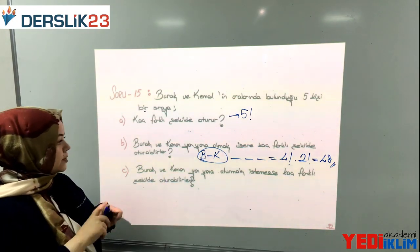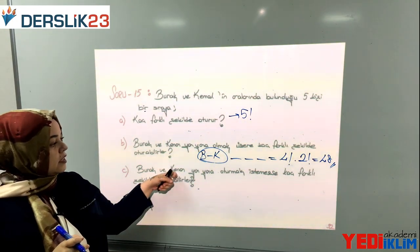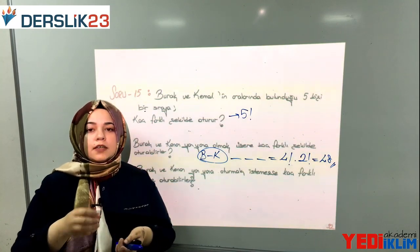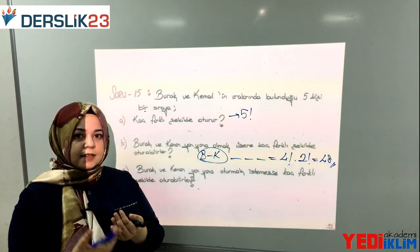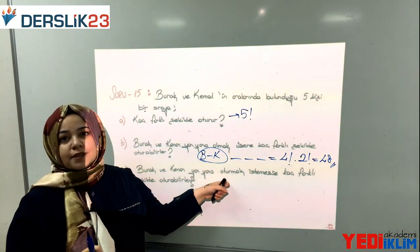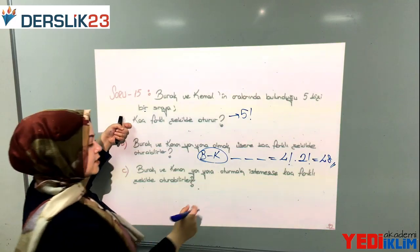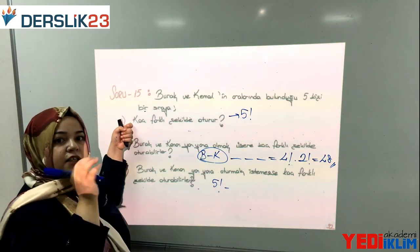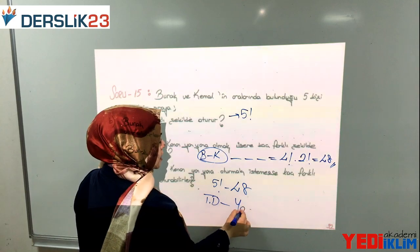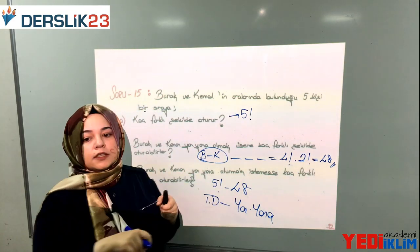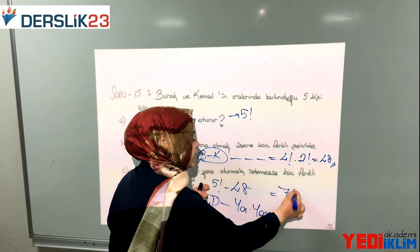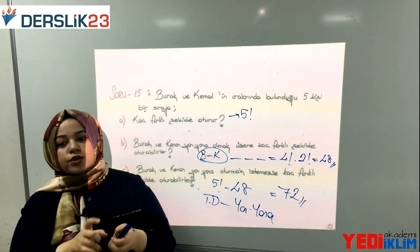C şıkkında Burak ve Kenan yan yana oturmak istemezlerse kaç farklı şekilde otururlar? Yan yana oturmama durumlarını tek tek düşünmek yerine tüm durumdan yan yana oturdukları durumu çıkarırsak buluruz. Tüm durumumuz A şıkkındaki 5! = 120, yan yana bulduk B şıkkında 48. 120 - 48 = 72 farklı şekilde oturduklarını buluyoruz.